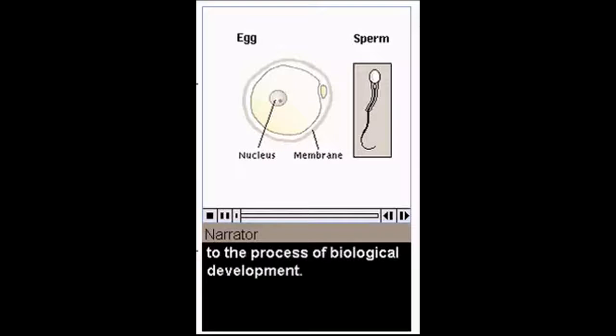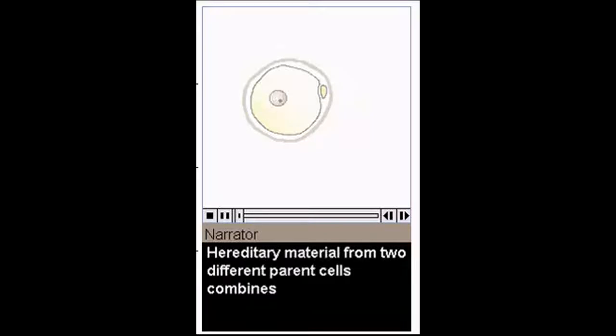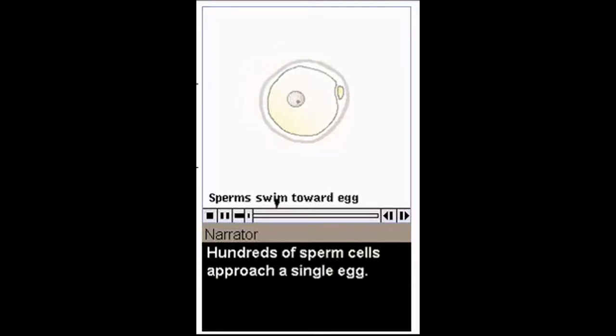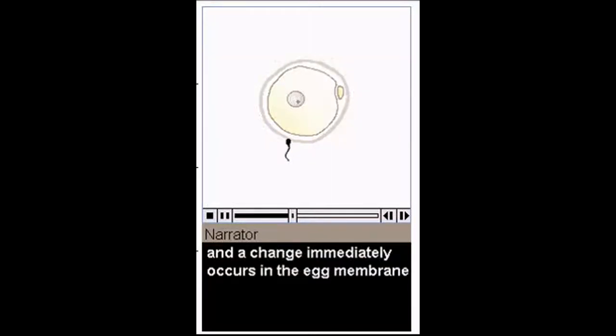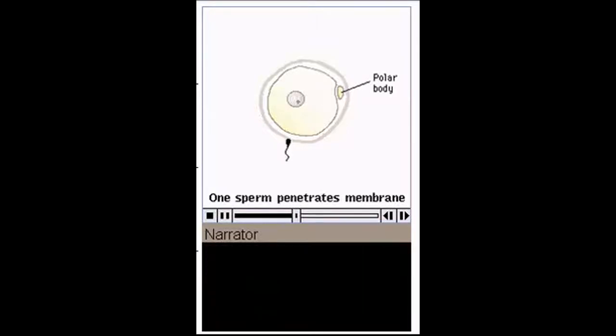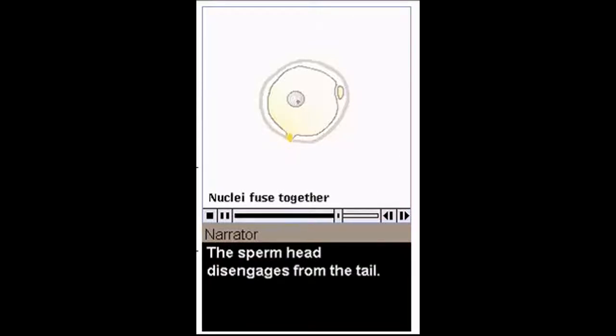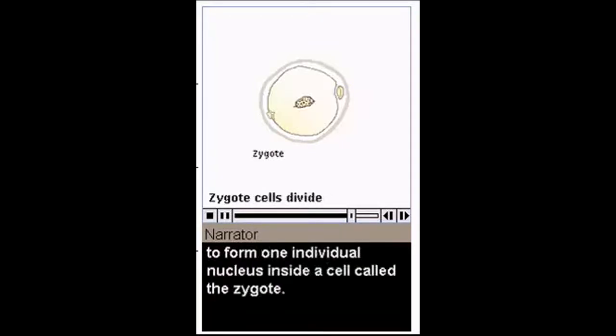Fertilization is the key to the process of biological development. It occurs when the male sperm cell unites with the female ovum or egg. Hereditary material from two different parent cells combines to form a new individual, similar to the parents, but completely unique. Hundreds of sperm cells approach a single egg. Only one of them attaches, and a change immediately occurs in the egg membrane that keeps others from attaching. The sperm penetrates the membrane, and egg activation occurs. The sperm head disengages from the tail. The egg and sperm nuclei fuse to form one individual nucleus inside a cell called the zygote.